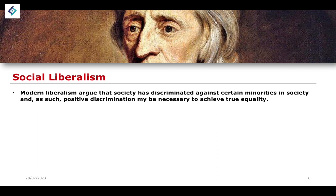Modern liberals also argue that society has discriminated against certain minorities, and as such, positive discrimination may be necessary to achieve true equality. This ties into the idea of systemic oppression — that the systems in place today carry echoes of previously existing systems that did oppress certain minority groups, on the basis of race, gender, or sexual orientation. Positive discrimination implements programs that discriminate in favor of these minority groups, such as affirmative action programs.